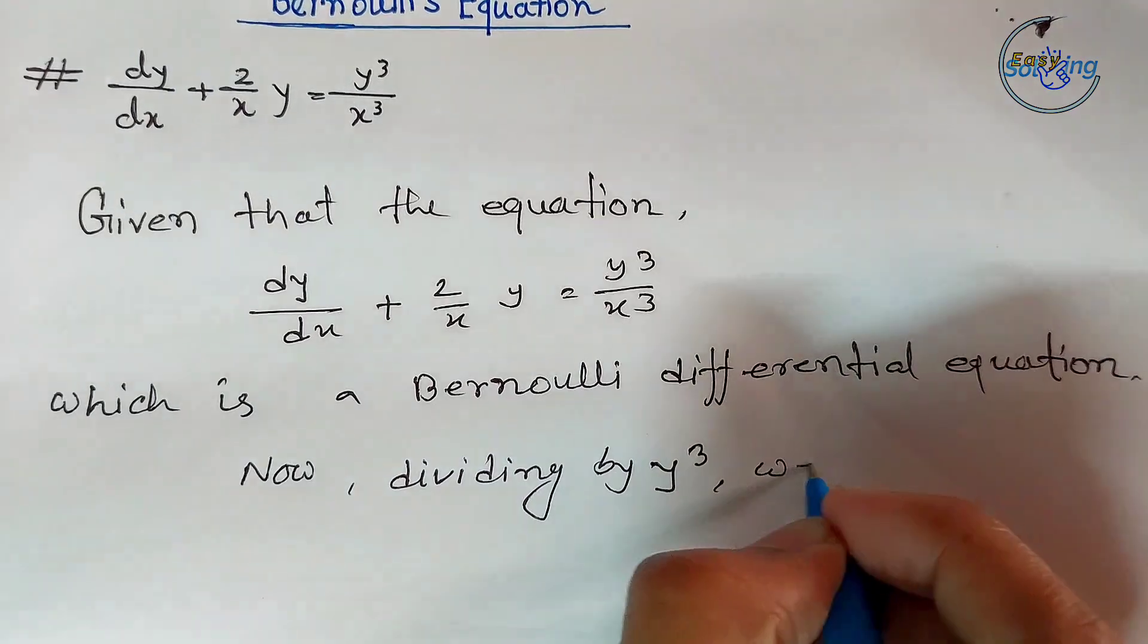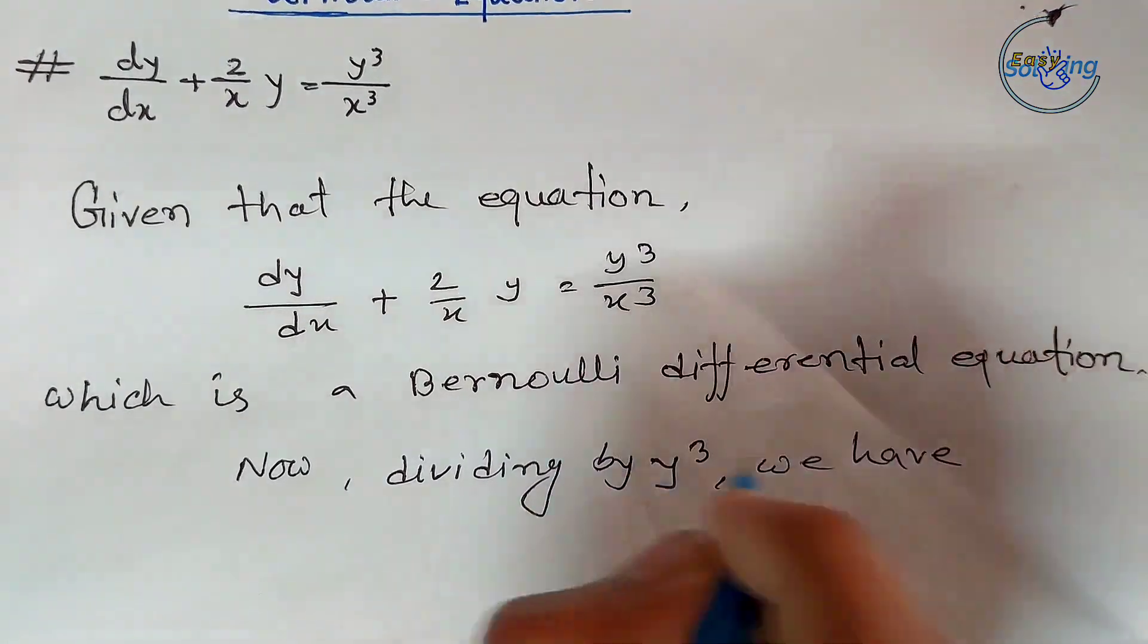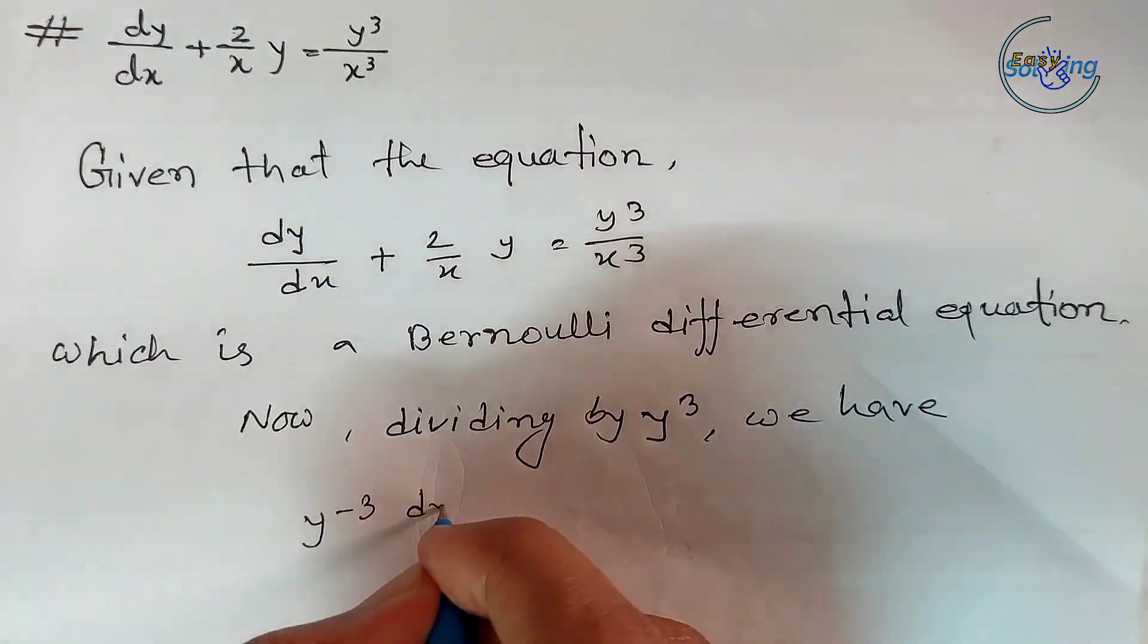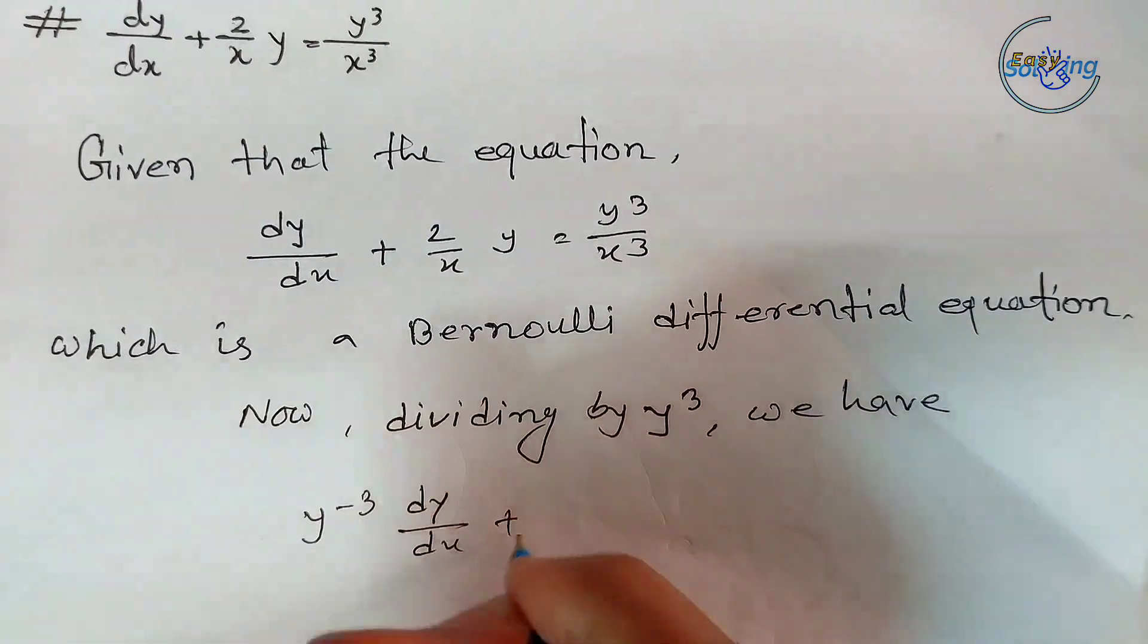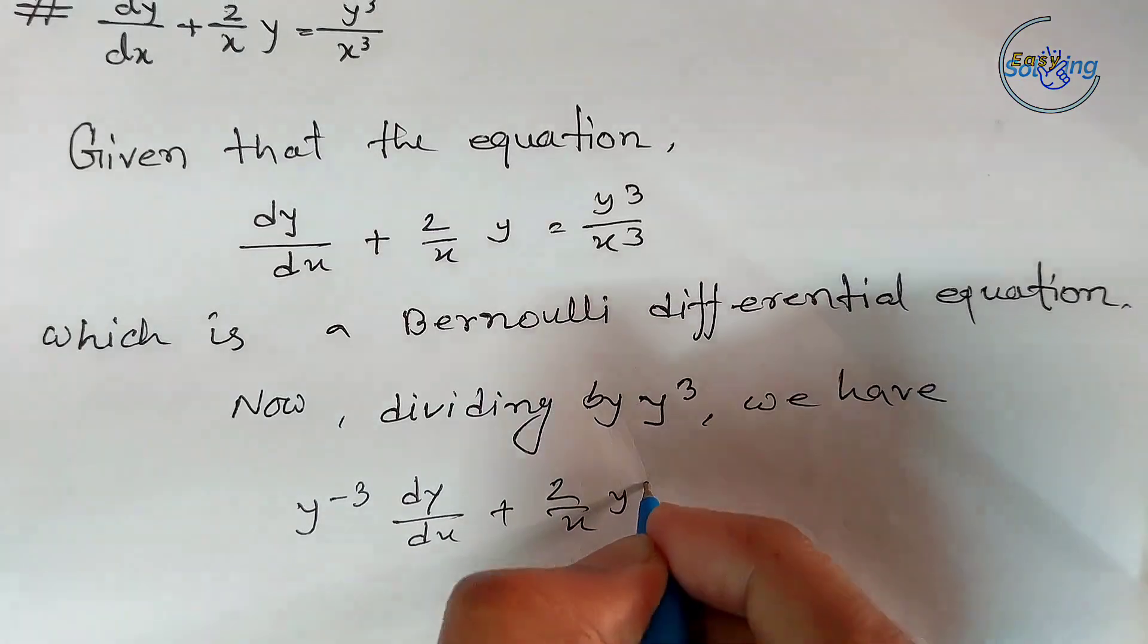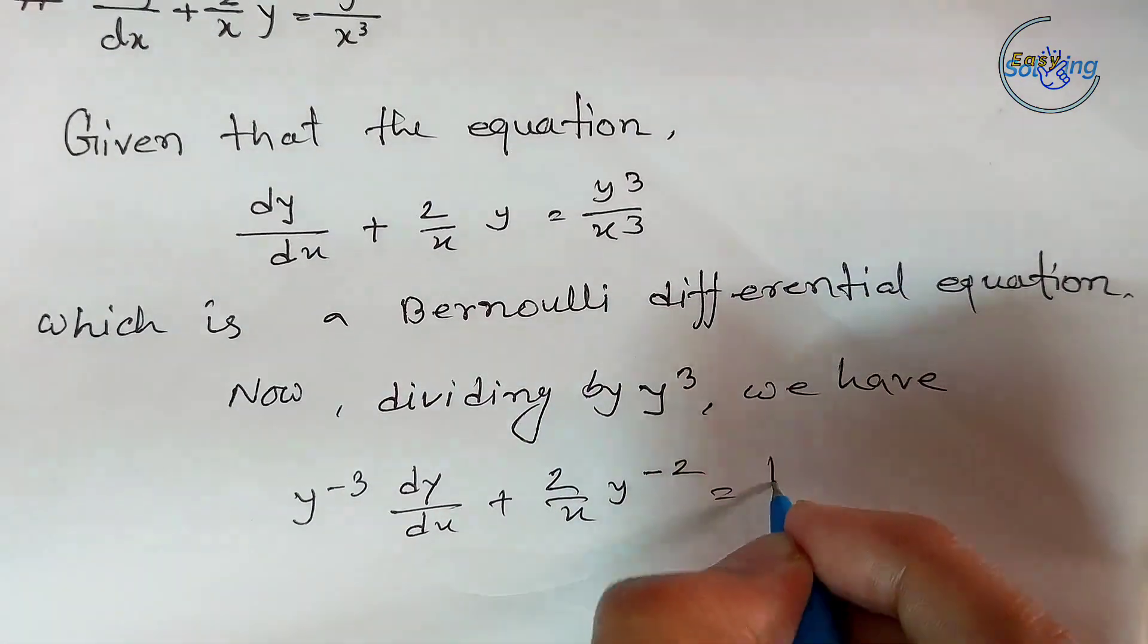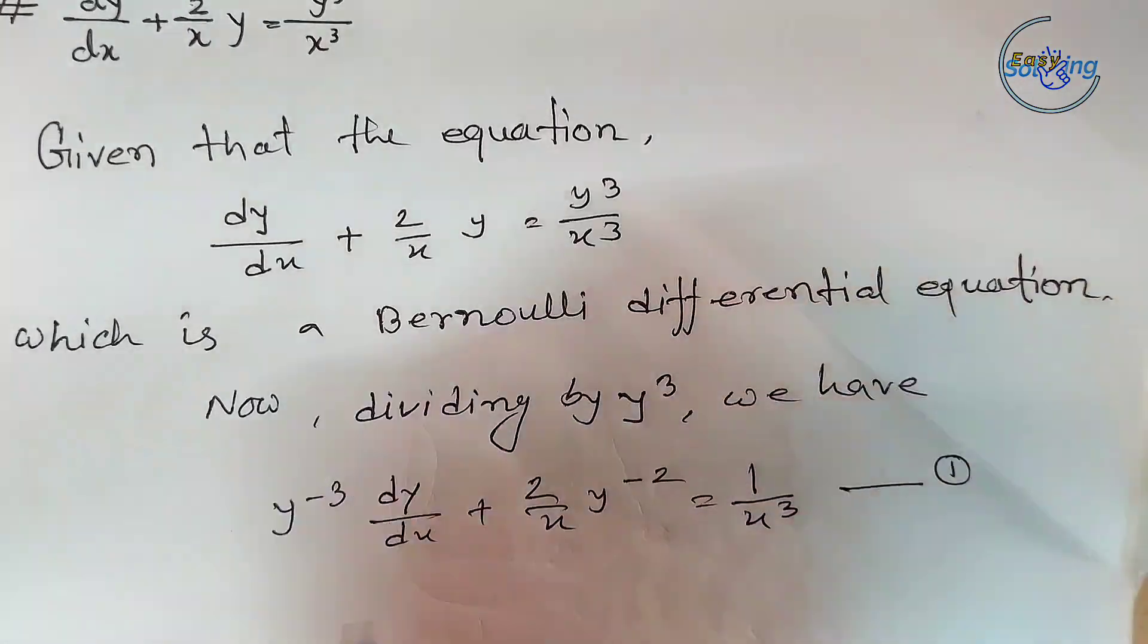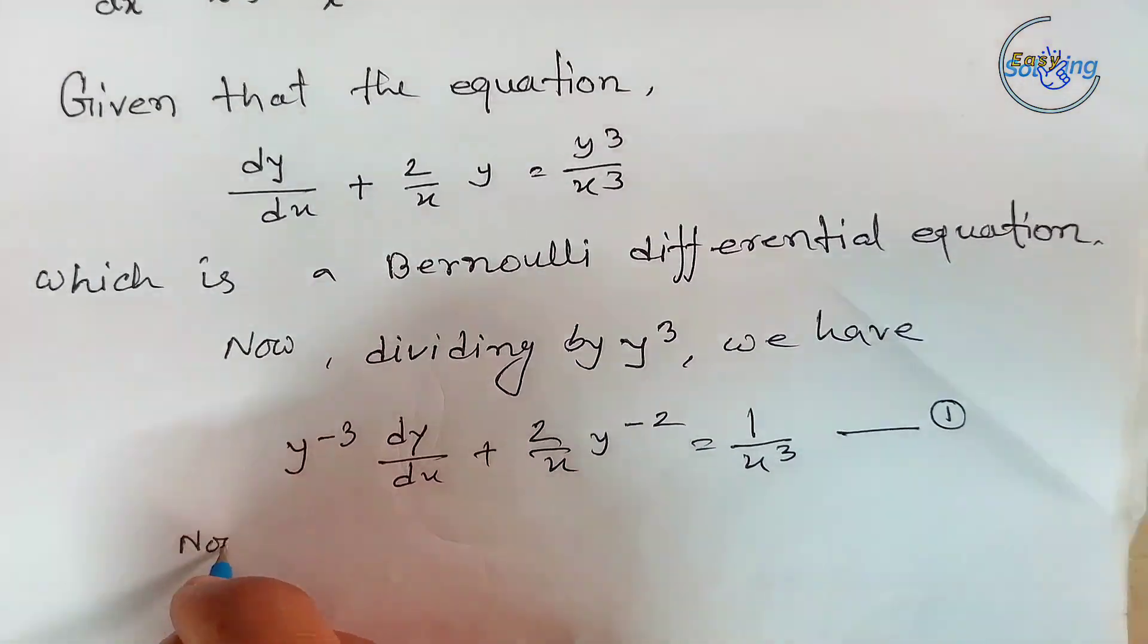y^(-3)·dy/dx + (2/x)·y^(-2) = 1/x³. This is equation 1.